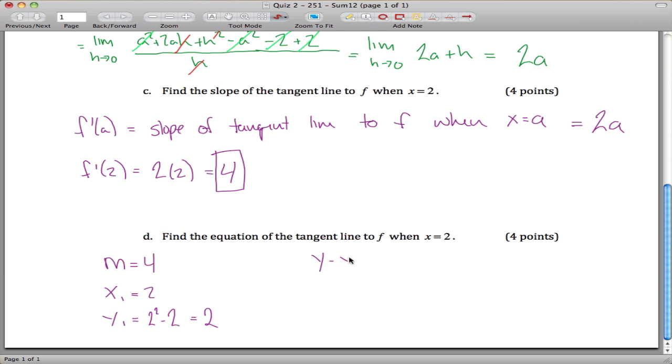So if I use this formula, there's a couple different ways to do this. But this is called point slope formula, and y1 is equal to 2, so I get y minus 2, m is equal to 4, x minus 2. How about one more step? y minus 2 equals 4x minus 8, so y equals 4x minus 6 is the equation of the tangent line to this function when x equals 2. Final answer, end of the quiz.